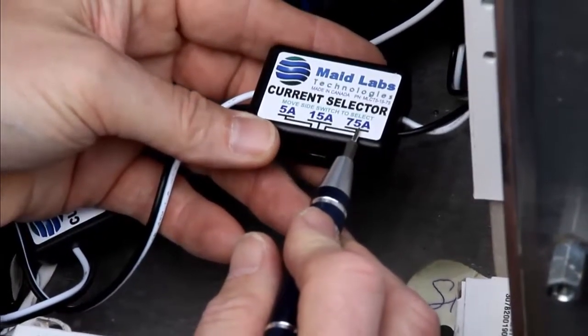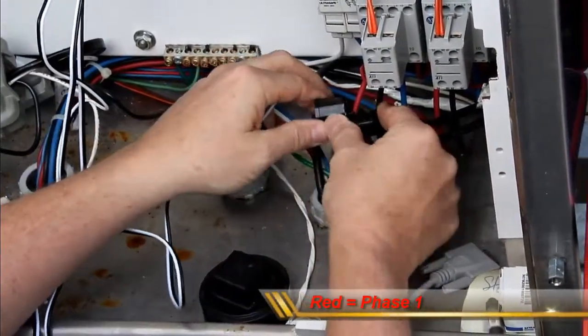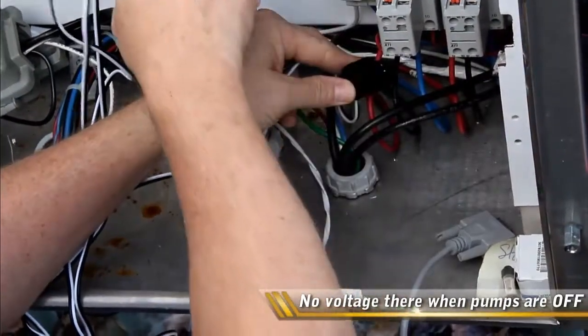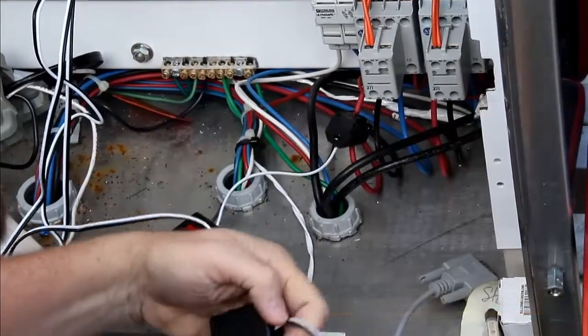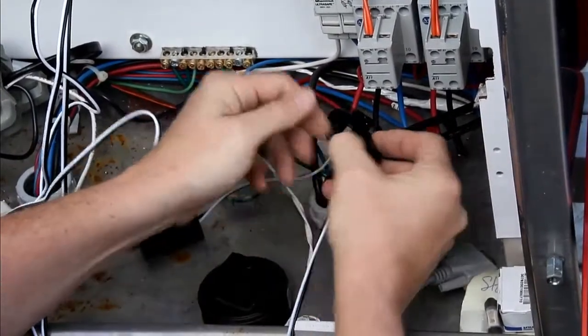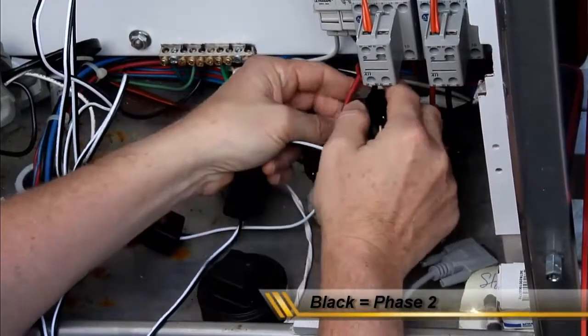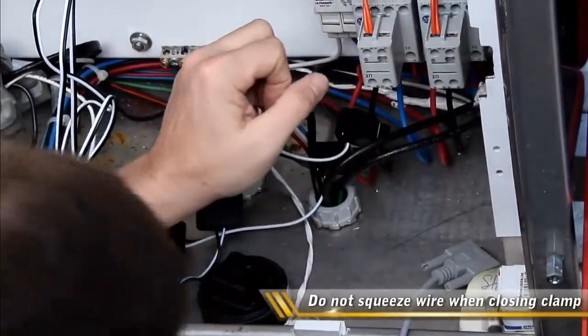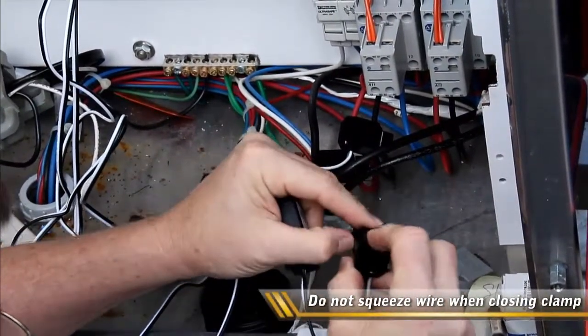This current clamp is for phase one, so hook it up like this. It clips together. Black is for phase two, and blue for phase three.